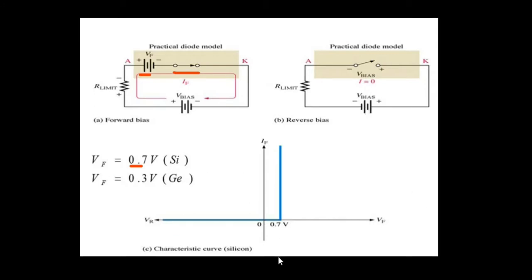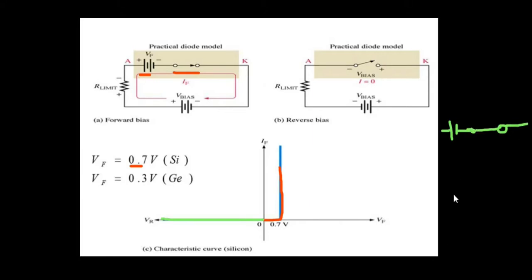Before a practical diode will work, it needs a voltage equal to the biopotential. For silicon, it needs at least 0.7 volts to allow current to flow through. Once the voltage builds up to 0.7V, current will start flowing through it. When it is reverse biased, no matter the amount of voltage applied, there will be no current flow. The equivalent circuit is a voltage source in series with a switch — closed when forward biased and open when reverse biased.